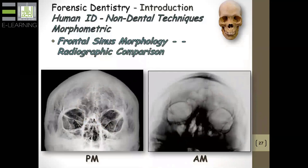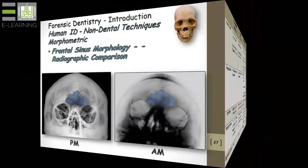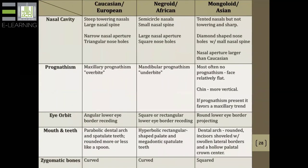We now know that the frontal sinus is also unique in its outline. If the individual was known to have any AP or anterior-posterior skull films taken during life, they might be compared to an AP skull film of the decedent. You can see in both of these cases the outline is exactly the same. This chart indicates many of the characteristics I've tried to describe, differentiating between the classic racial groups — Asian, African, and people of European descent.